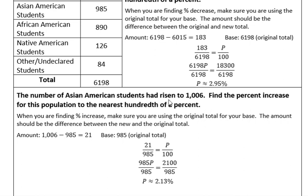The number of Asian American students had risen to 1,006 in 2018. The rise was from 1,000 to 1,006 — find the percent increase for this population to the nearest hundredth of a percent. This population originally had 985 students, so the original total of 985 should be your base. This is where people have trouble — they typically want to put the biggest number as their base, but it has to be the original total. Your amount is the difference: 1,006 minus 985, which gives us 21 as our amount.